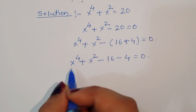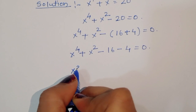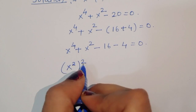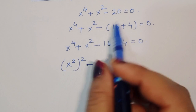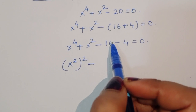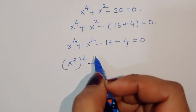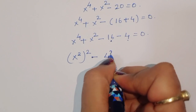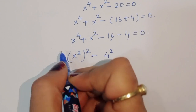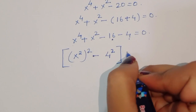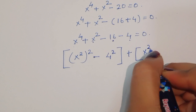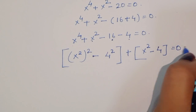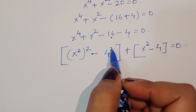Now rearranging the terms: x⁴ can be written as (x²)², and we have + 2² (since 4 = 2²), then - 4² (since 16 = 4²), plus the remaining term x² - 4.